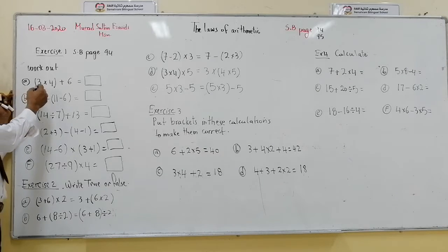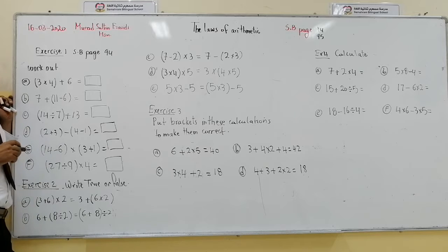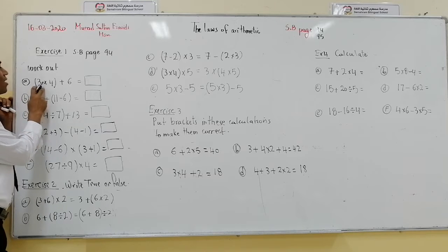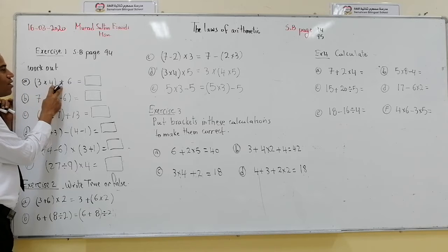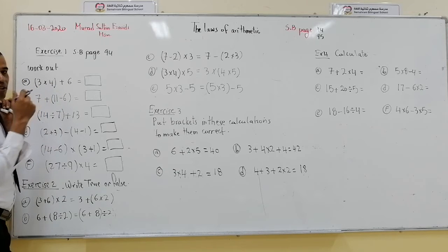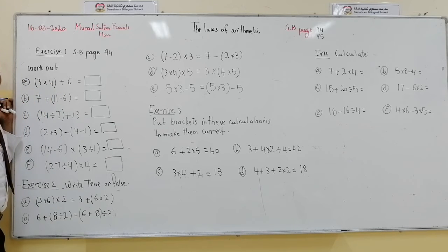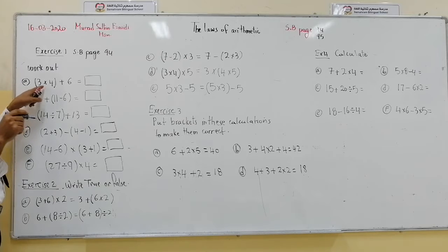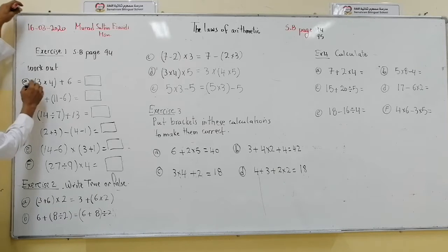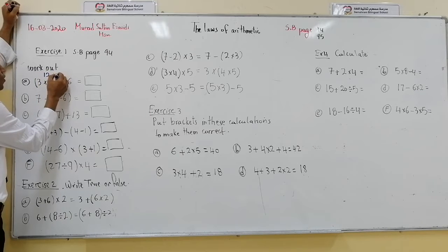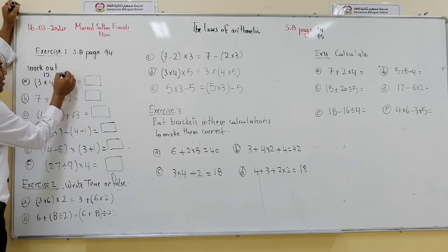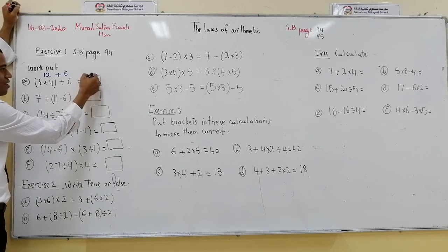Here we have 3 multiplied by (4 plus 6). We should calculate what is inside the brackets. So 3 multiplied by 4 is 12. 12 plus 6 gives us 18.